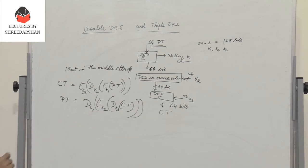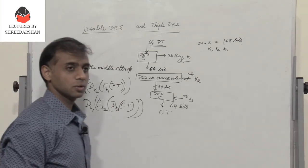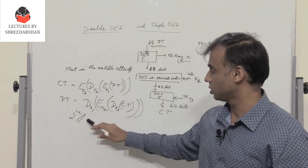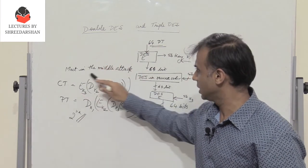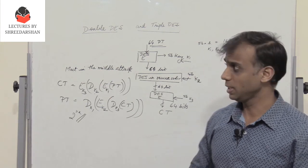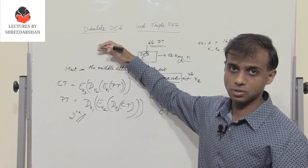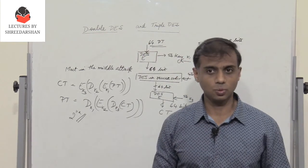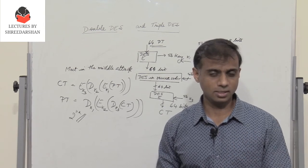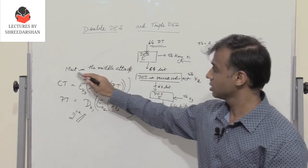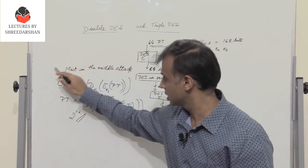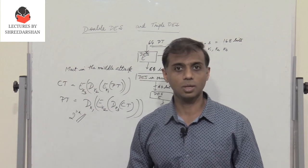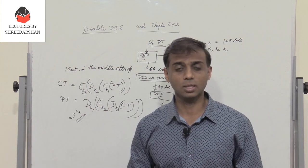Triple DES provides a total security of 2^112. Double DES is not used because it does not give us a security of 2^112, whereas Triple DES does. We need to understand why Double DES failed due to the Meet-in-the-Middle attack — make sure to watch the next lecture session where we will discuss that attack in detail. Thanks for watching; don't forget to like, share, subscribe, and press the bell icon for notifications.